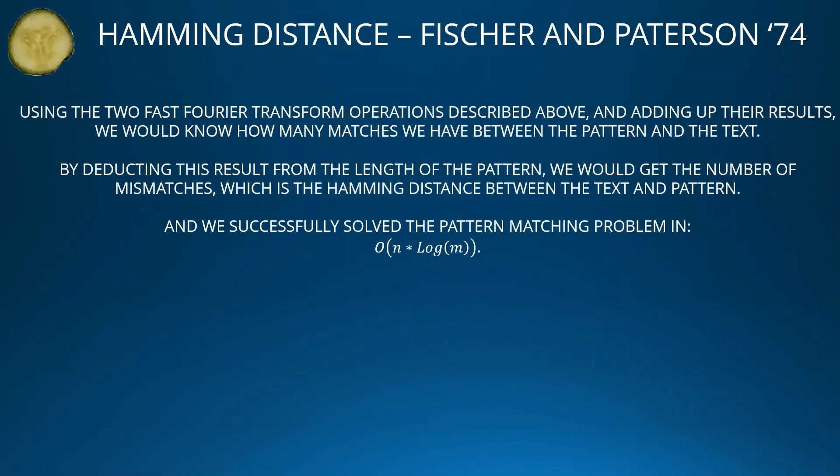Using the two FFT operations described above and adding up the results, we know how many matches we have between the pattern and the text. By subtracting this result from the length of the pattern, we get the number of mismatches — the Hamming distance between the text and the pattern. We have successfully solved the pattern matching problem in O(N log M) time.